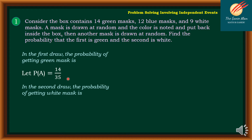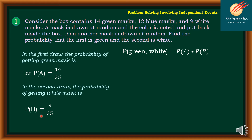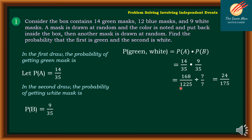For the second draw, the probability of B, getting a white mask, is 9 out of 35, because there are 9 white masks out of 35 total. We are looking for the probability of green and white, which is P(A) × P(B) = 14/35 × 9/35 = 168/1225. Reducing by dividing both numerator and denominator by 7, we get 24 over 175.